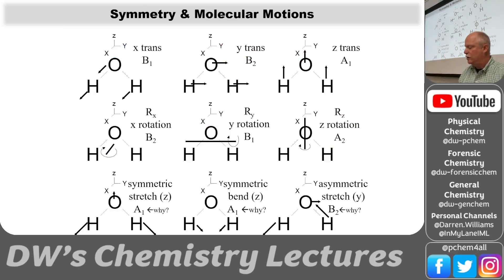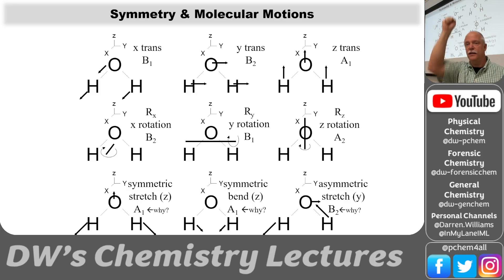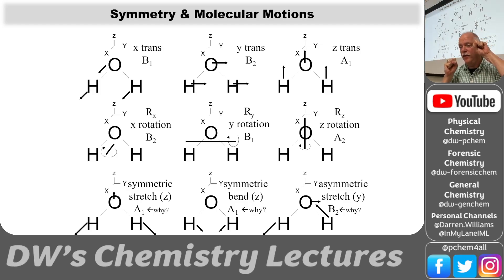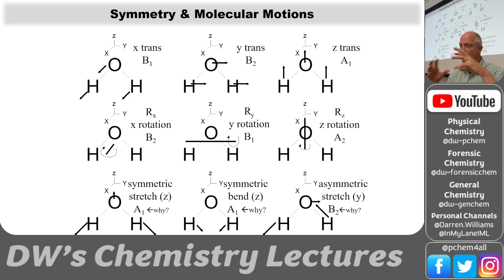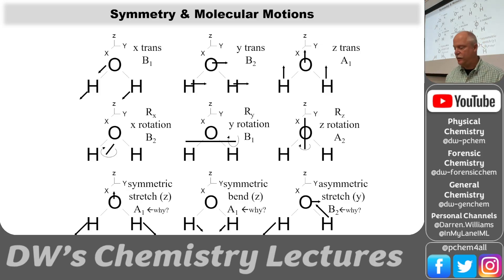Let's apply this to water. Water has three atoms, and a single atom in space can do three things — it can translate in X, Y, and Z. When we make molecules, we still have three translational degrees of freedom, then three rotational degrees of freedom, and the remainder are vibrations. For water, we have nine total degrees of freedom shown here: the top three are translations where all three atoms move in space, and the next three are rotations.